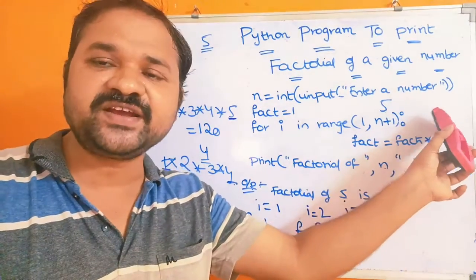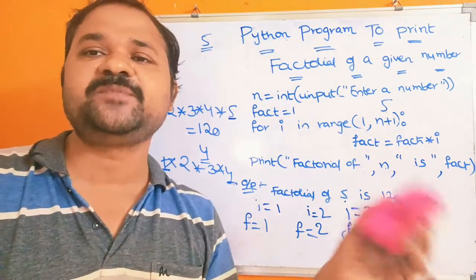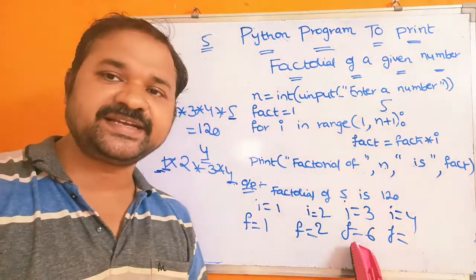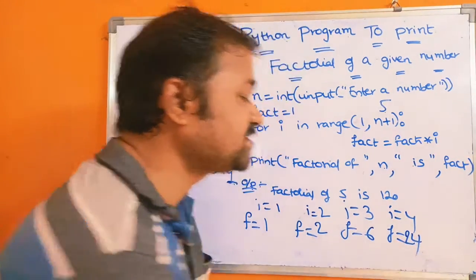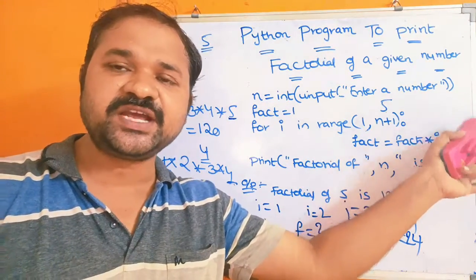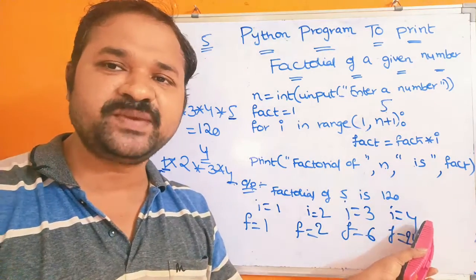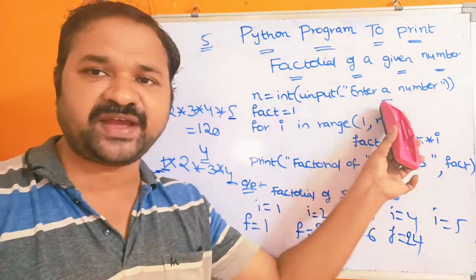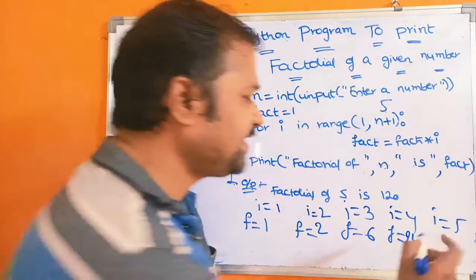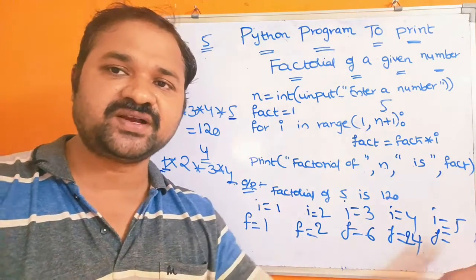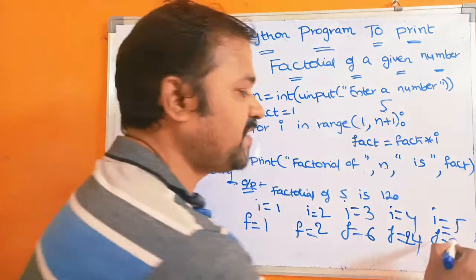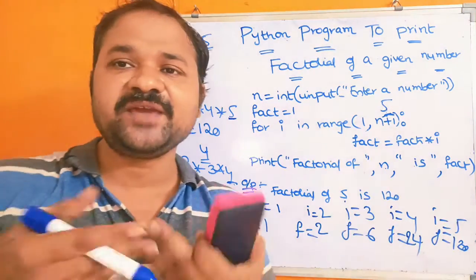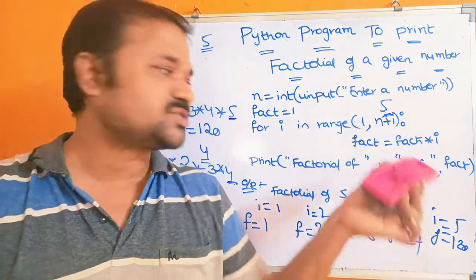Next, 1 is added to i, so i becomes 5. 5 ≤ 5, condition is true, so the body executes. fact = 24 × 5 = 120. Now fact becomes 120. The for loop repeats only up to 5, so when i becomes 6, the condition 6 ≤ 5 is false and control exits the for loop.